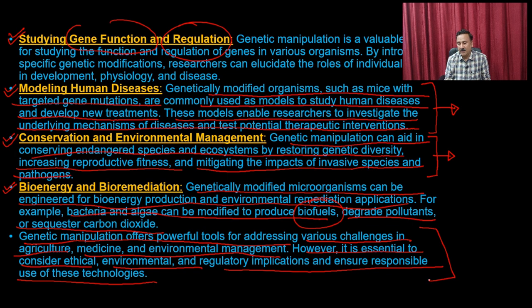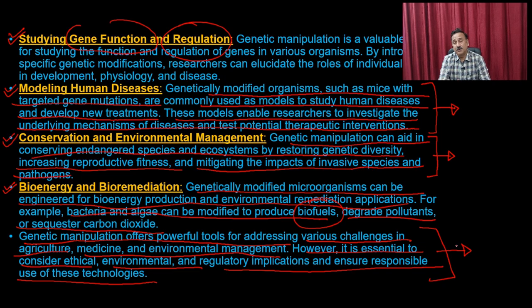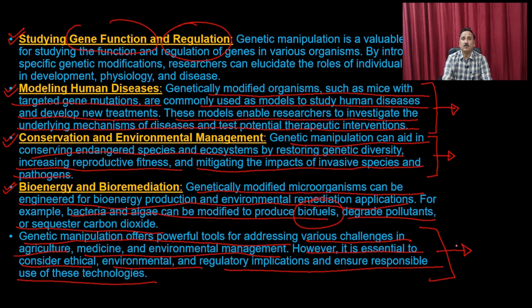Biotechnology principles can be used for the production of bioenergy and bioremediation. Bacteria and algae can be modified to produce biofuels, degrade pollutants, or sequester carbon dioxide. Genetic manipulation offers a powerful tool for addressing various challenges in agriculture, medicine, and environmental management. However, it is essential to consider the ethical, environmental, and regulatory implications and ensure responsible use of these technologies.